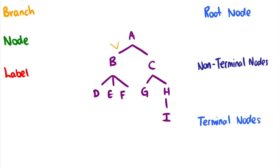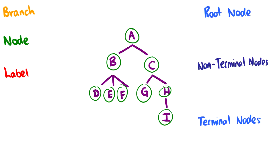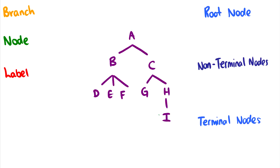The nodes are all of our terminals and non-terminals: A, B, C, D, E, F, G, H, and I. We also have labels — the label for each node. The node A is labeled A. Sometimes nodes are multi-labeled; for example, D might be labeled 'the', E 'old', F 'man', G 'went', I 'away'. So we can have labels that are words as well.